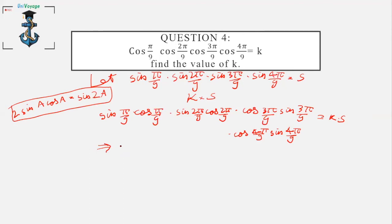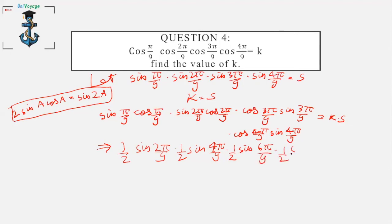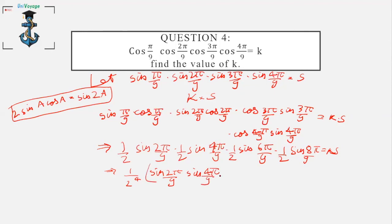Using the formula, each pair gives a half factor: (1/2)sin(2π/9), (1/2)sin(4π/9), (1/2)sin(6π/9), and (1/2)sin(8π/9), so k·s = (1/2⁴)·sin(2π/9)·sin(4π/9)·sin(6π/9)·sin(8π/9).